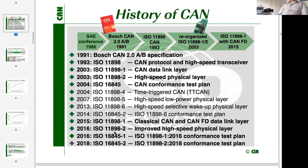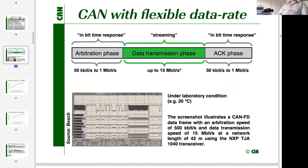As higher data rates require faster communication, it was necessary to update the physical layer document and accompanying conformance test plan. When CAN was updated, there was one key requirement: keep the nature of classical CAN. Users should not be forced to learn something entirely new — they should keep most of their knowledge. The idea was simply to add additional functionality: higher data throughput, larger payload, and similar enhancements.